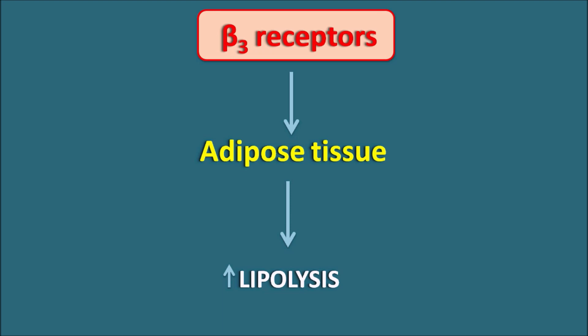Adrenergic receptors are widely distributed in our physiological system. To summarize: alpha-1 is coupled with IP3 and diacylglycerol and is excitatory in nature. Alpha-2 is coupled with a decrease in cyclic AMP and is inhibitory in nature. All beta receptors are coupled with an increase in cyclic AMP — they can be both excitatory and inhibitory depending on the target. Alpha-1 receptors produce contraction of all smooth muscles except the GI smooth muscle where they produce relaxation. Alpha-2 receptors mainly inhibit neurotransmitter release. Beta-1 receptors stimulate the heart. Beta-2 receptors produce relaxation of all smooth muscles. Beta-3 receptors mainly increase lipolysis. That covers adrenergic receptors, their location, and physiological role.